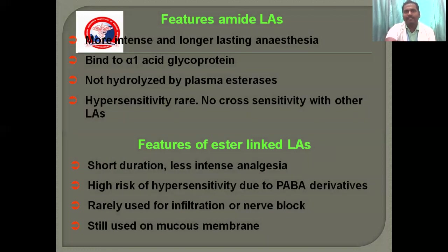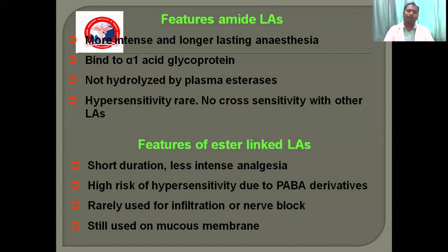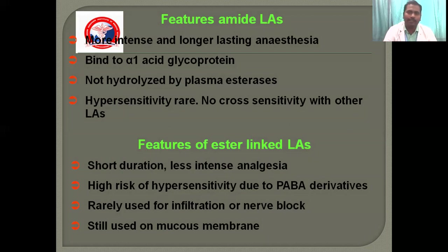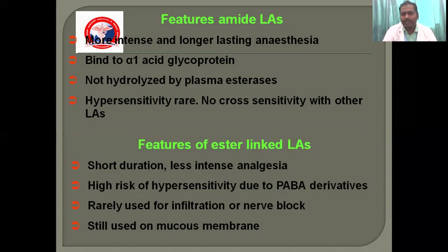The characteristics of local anaesthetics in amide groups include more intermediate and long-lasting anaesthesia. They bind to alpha-1-acid glycoprotein and are not hydrolyzed by plasma esterase. Hypersensitivity is very rare, which is why they are most commonly used in clinical practice, and there is no cross-reactivity with other local anaesthetics. Ester-linked local anaesthetics have less duration and less intense analgesia, and their hypersensitivity reaction rate is very high, which is why they are rarely used for local infiltration.